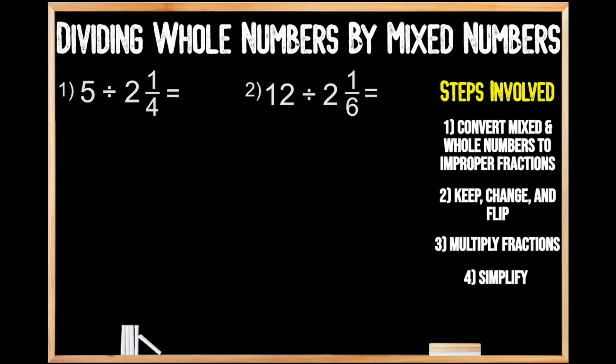We're going to begin by converting our whole number into an improper fraction. Whenever you're looking to convert a whole number into a fraction, you're going to write a fraction where the value of our whole number is our numerator, and we have a denominator of one. So in this case, we have five over one.